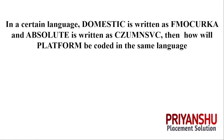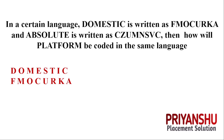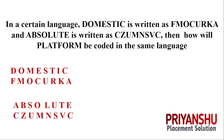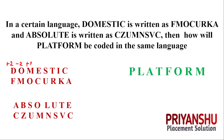The first question: in a certain language, 'domestic' is written as something and 'absolute' is written as something, and we need to find the code for 'platform'. As you can see, D to F means plus 2. O is position 15 and M is 13, so minus 2. Then M to O is plus 2 again. The pattern alternates: plus 2, minus 2, plus 2, minus 2.